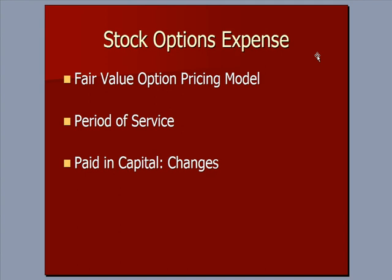We started the last video with a discussion of stock options expensing, and a few points I want to repeat. The first is that there is a fair value option pricing model, which means that if we grant stock options to an employee and we think a certain number of those will vest — meaning the employee fulfills the conditions, exercises the options, and buys the stock — there's a fair value to that exercising that we want to include in our expense calculation. There's a method for doing that which is beyond the scope of this video, but you should know that a process exists.